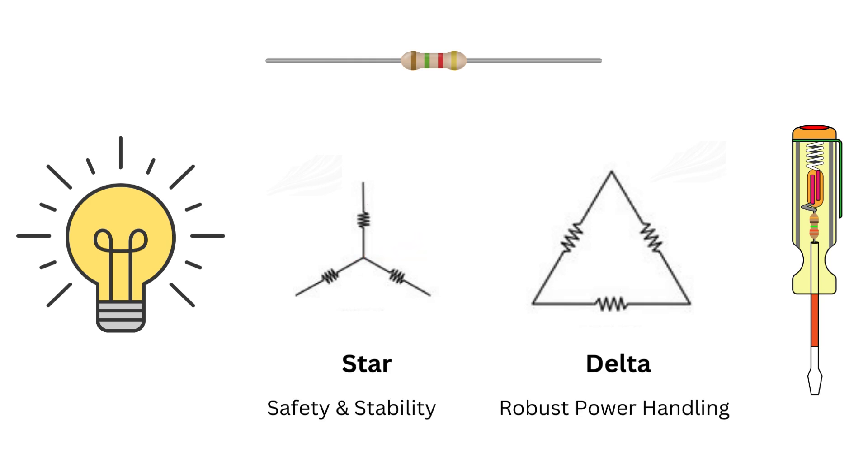Here's a quick recap: the star connection offers stability and safety with a central neutral point. The delta connection provides robust power handling in a closed loop. Both are crucial in electrical systems, each serving its purpose in different scenarios.